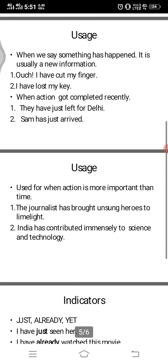Usage is very important — you should know where it is used. It is used when we say something has happened, usually as new information. For example: 'Ouch, I have cut my finger' — you've realized it and you're announcing it. 'I have lost my key' — again, an announcement that something has happened. It is also used when an action got completed recently, like 'They have just left for Delhi' or 'I have just finished my homework' or 'She has just arrived.'